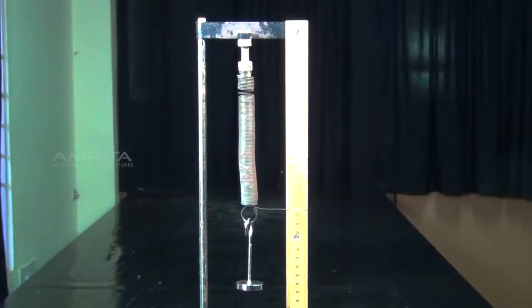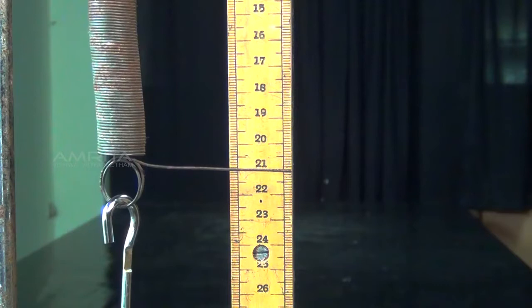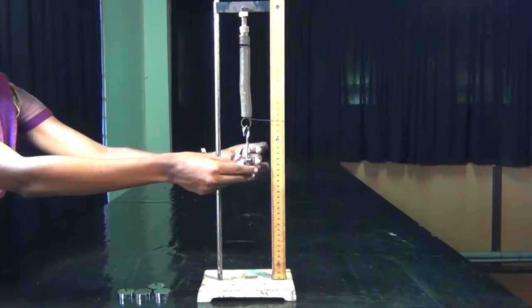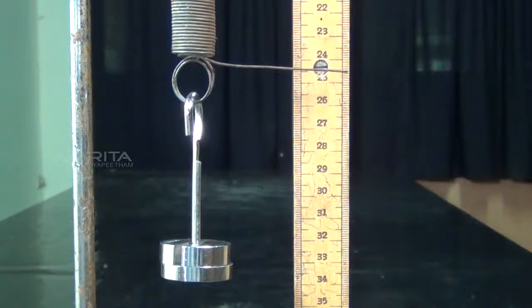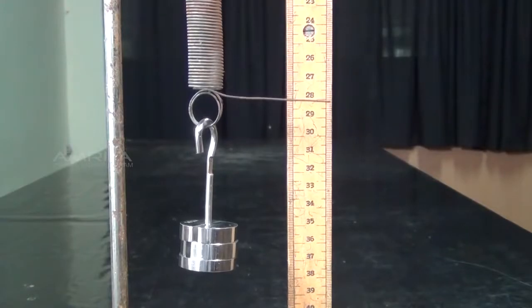With the weight hanger alone attached to the spring, the reading of the pointer on the scale is noted. Slotted weights are added one by one to the weight hanger, each time noting the scale readings.